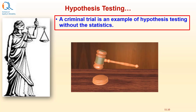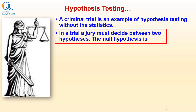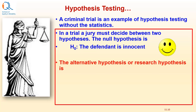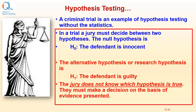A criminal trial is an example of hypothesis testing without statistics. In a trial, a jury must decide between two hypotheses. The null hypothesis is H0: the defendant is innocent. The alternate hypothesis or research hypothesis is H1: the defendant is guilty. The jury does not know which hypothesis is actually true. They must make a decision on the basis of evidence presented in court.